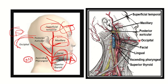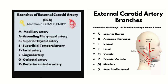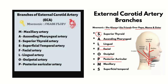Knowledge of the location of the branches is also important for the external carotid artery. Here is a mnemonic to help remember the branches easily: 'She Always Likes Friends Over Papa Mama and Sister.' S for superior thyroid, A for ascending pharyngeal, L for lingual, F for facial, O for occipital, P for posterior auricular, M for maxillary, and S for superficial temporal.